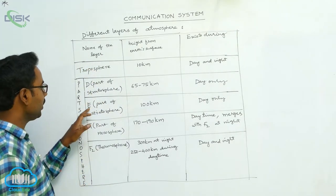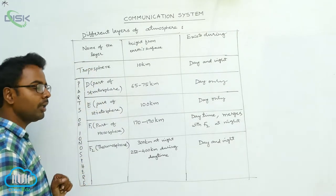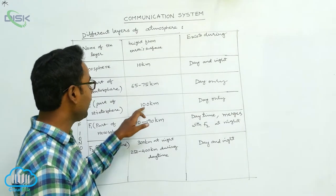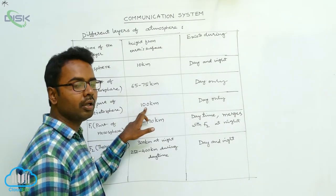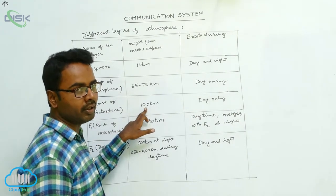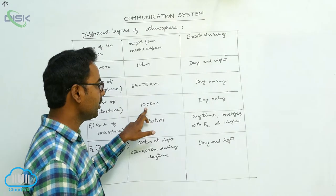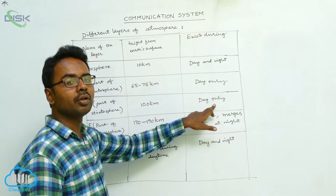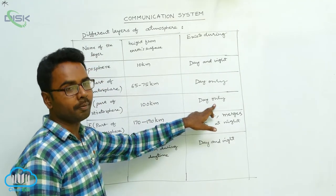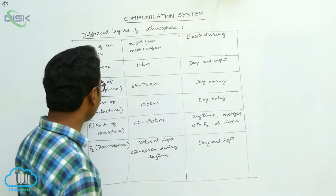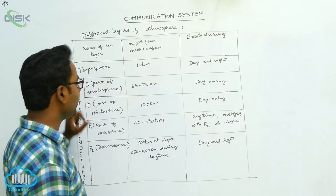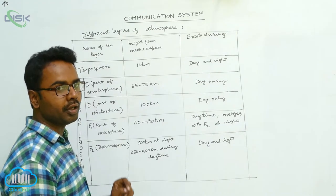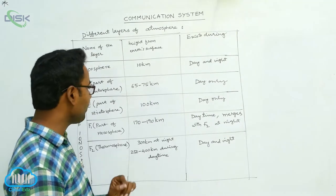E is also part of the stratosphere. It is at a height of 100 km from the Earth's surface and it also exists during daytime only. So both parts of the stratosphere, D and E, exist during daytime only.